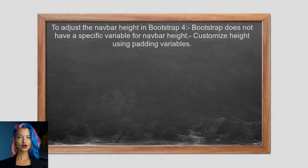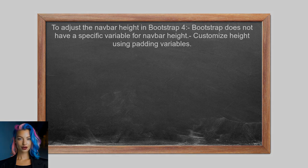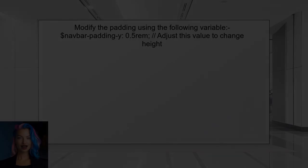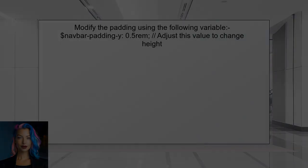To adjust the navbar height in Bootstrap 4, you should first understand that Bootstrap does not provide a specific variable for navbar height. Instead, you can customize the height using the padding variables — specifically the `$navbar-padding-y` variable. This variable controls the vertical padding of the navbar, which effectively changes its height.